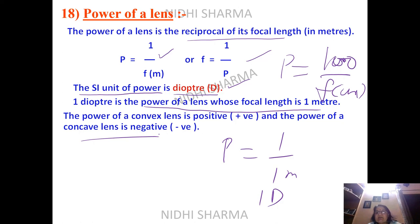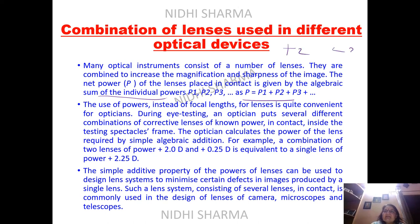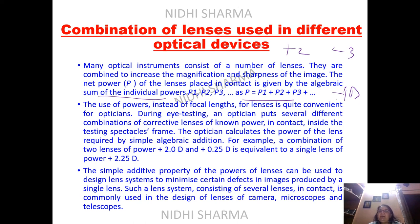Sometimes we need a combination of lenses. For combinations in optical devices, the total power is the algebraic sum of individual powers. For example, if one lens is +2 diopter and another is −3 diopter, the combination is −1 diopter — behaving like a diverging lens. If the combined power is positive, it behaves like a converging lens.